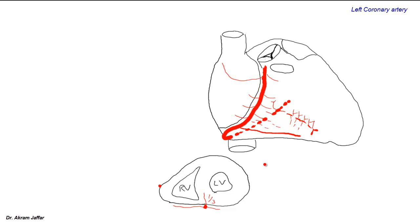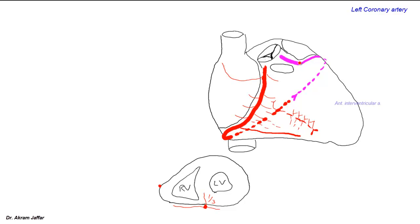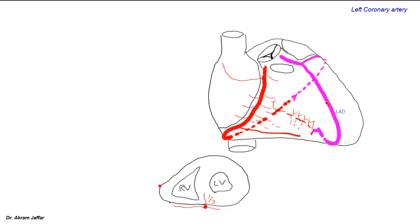The left coronary artery arises from the left posterior aortic sinus and runs for a short distance between the pulmonary trunk and the auricle of the left atrium, then divides into two main branches. One goes around the heart — the circumflex branch — which anastomoses with the termination of the right coronary artery. The other branch passes into the anterior interventricular groove and around the apex of the heart to meet the posterior interventricular artery. The anterior interventricular artery is also called the left anterior descending artery (LAD), while the posterior interventricular artery is also called the posterior descending artery (PDA).